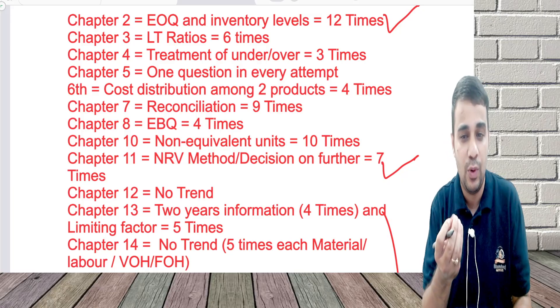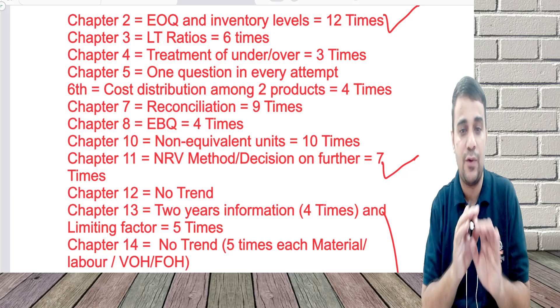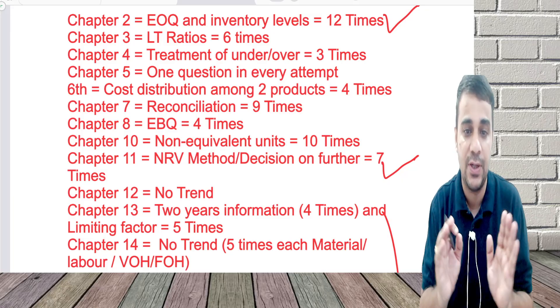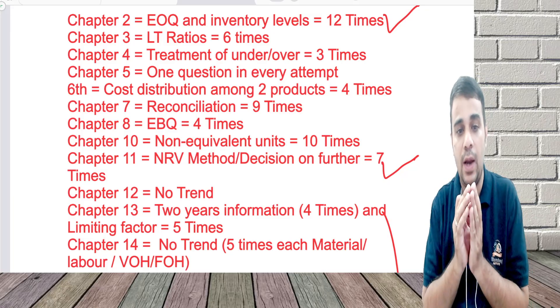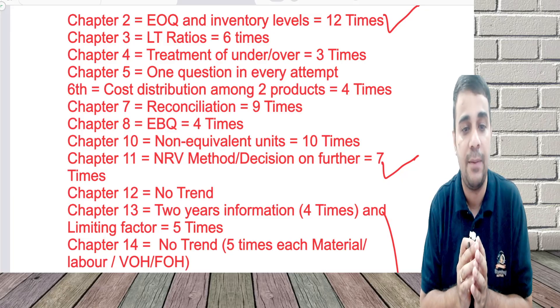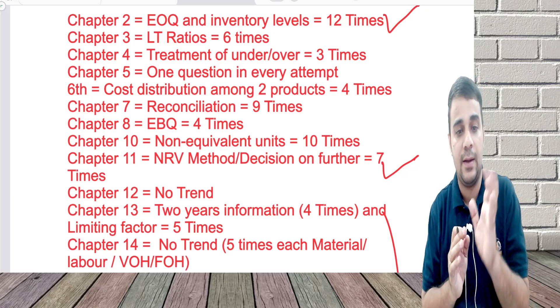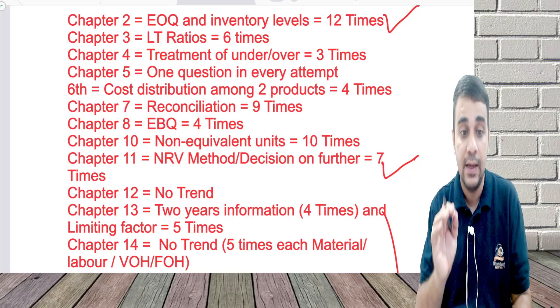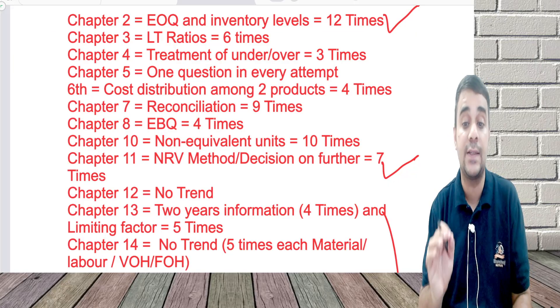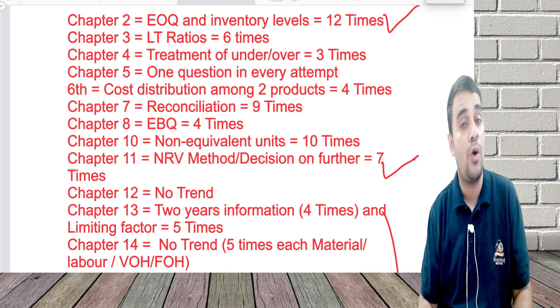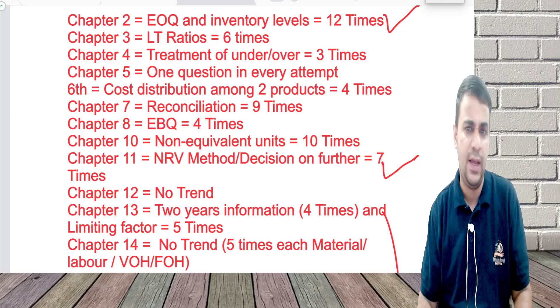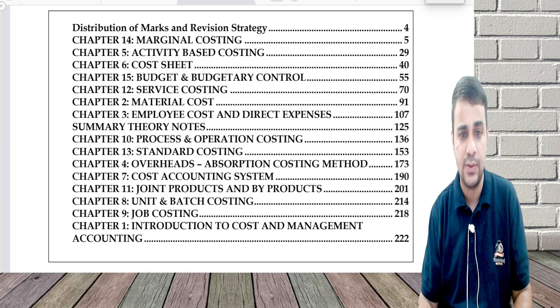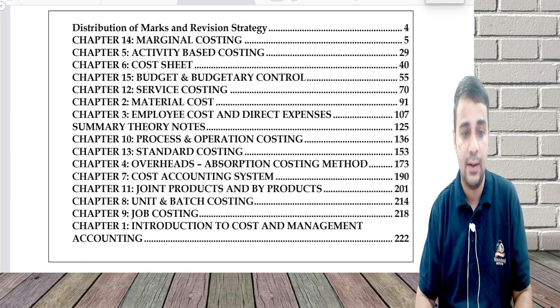Chapter 5 has only one or two types of questions — I have not specifically mentioned anything, but one question keeps coming in every attempt, so please cover that chapter. Chapter 6 is your cost sheet chapter, and a question comes in every attempt.